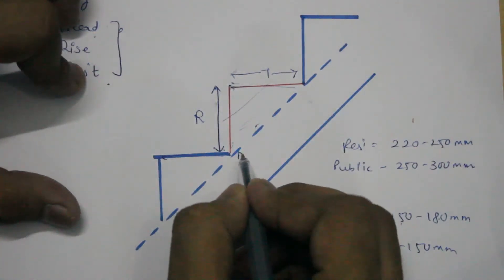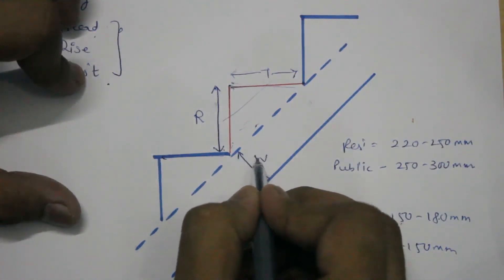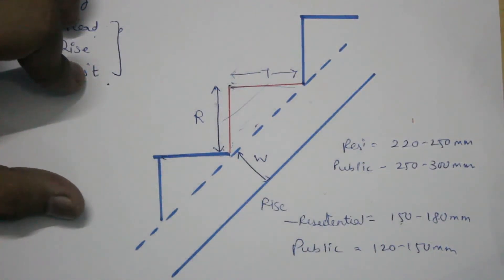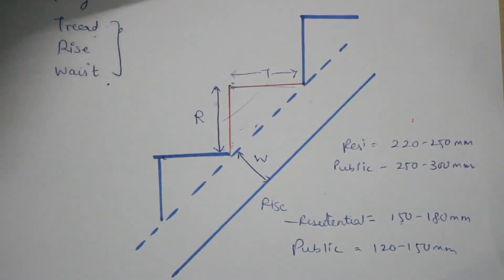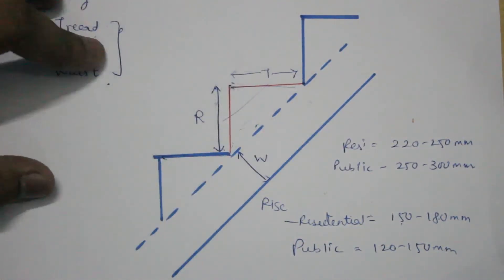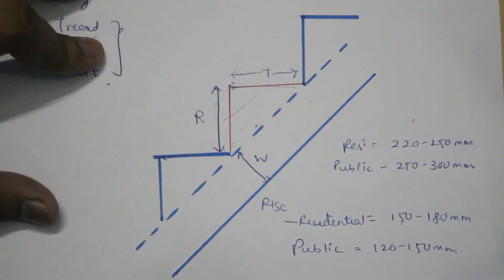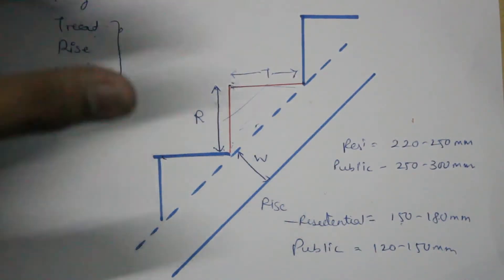The third component is the waste. This part of the slab is called the waste, denoted as W. The waste is essentially a slab that supports the steps — it is the slab which is supporting the steps.